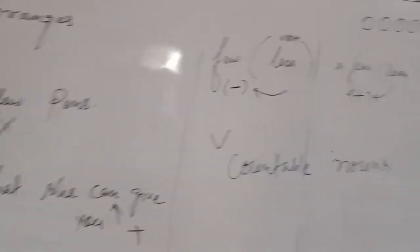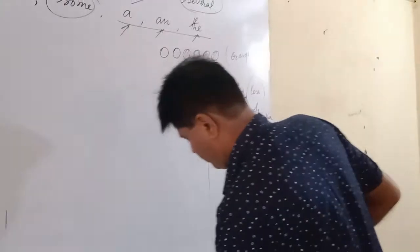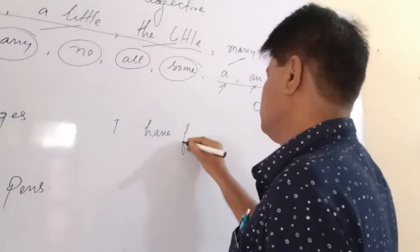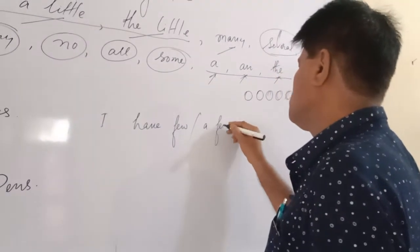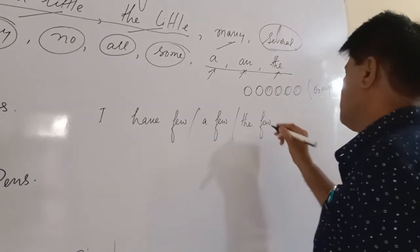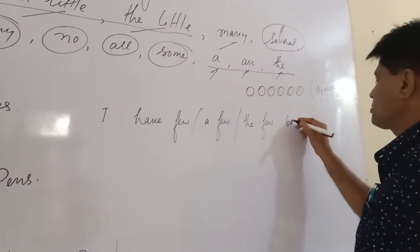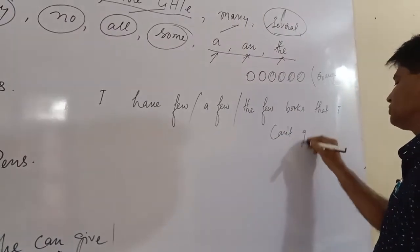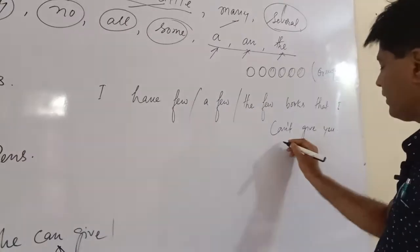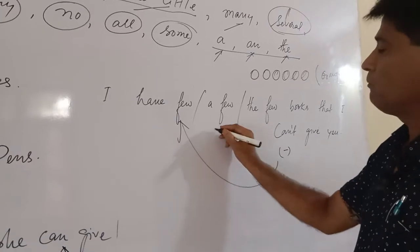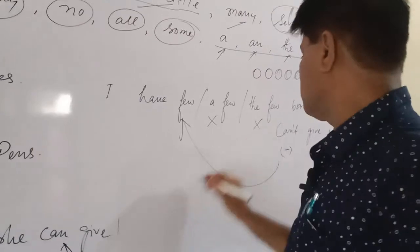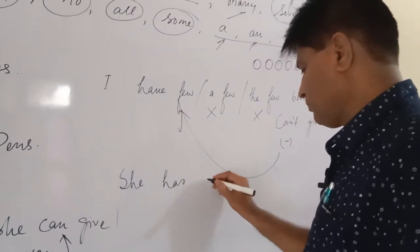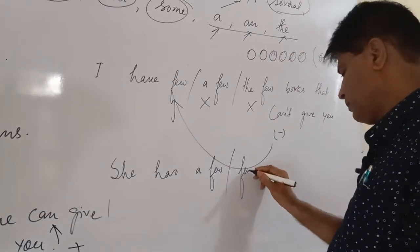More examples with 'few,' 'a few,' and 'the few': 'I have few words that I cannot give you.' Here 'cannot' defines a negative sense, so you use 'few,' not 'a few' or 'the few.' When the sentence carries a negative sense, you must use 'few.'